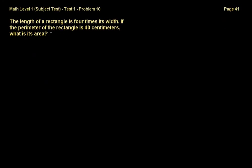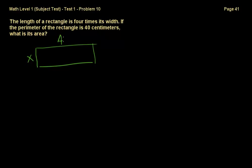Problem 10: the length of a rectangle is 4 times its width. If the perimeter is 40 centimeters, what is its area? Let the width be x, so the length is 4x. The perimeter equals 4x plus x plus 4x plus x, which is 10x. Setting 10x equal to 40 centimeters and dividing both sides by 10 gives x equals 4 centimeters.